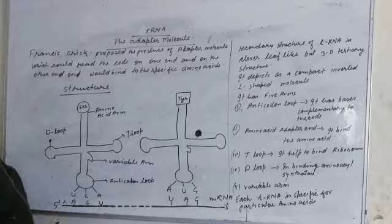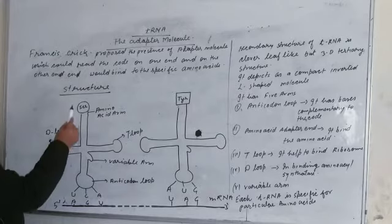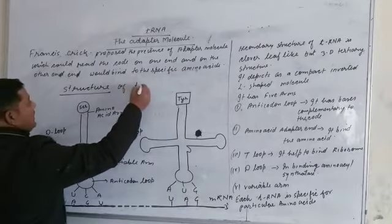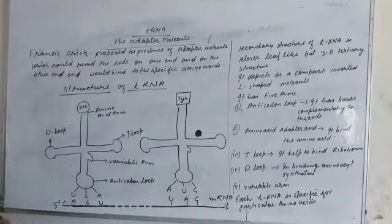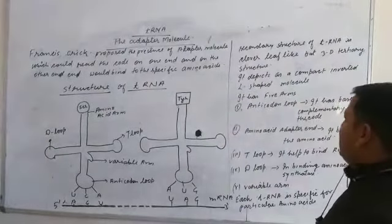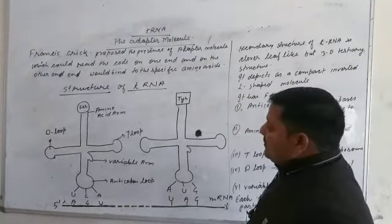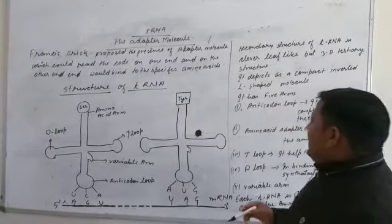Now students, next I will discuss the structure of tRNA. tRNA has a cloverleaf-like structure and a 3D tertiary structure. It has five arms.